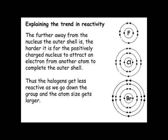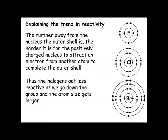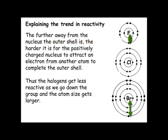Fluorine is very reactive, chlorine less so, bromine less so, and iodine even less. The reason is that these elements need to gain an electron to complete their outer shell. What can pull an electron in is the protons in the nucleus — protons are positively charged. Fluorine's nucleus is close to the outer shell and can attract an electron more easily than bromine can, because the distance between bromine's nucleus and the outer shell is much larger. Therefore, reactivity decreases down Group 7, with fluorine being the most reactive and iodine being the least.